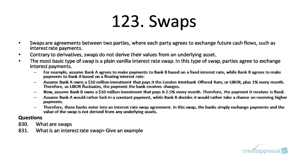Assume that Bank A prefers to lock in a constant payment, whereas Bank B decides to take a chance on receiving higher payments. They are simply taking different positions on the movement of interest rates — one is expecting rates to fall, the other is expecting rates to rise. Swaps happen when parties take contrary positions like this.